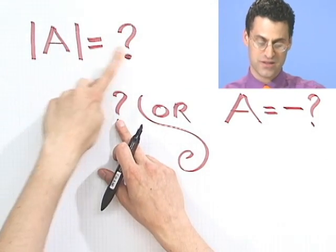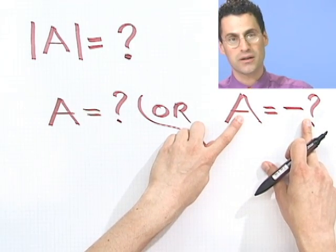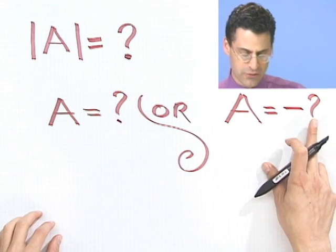One that looks like A equals the thing, and the other one is A equals negative the thing. That's all there is to it. So when you have an absolute value, let me give you a really simple example, and then we'll do a real one.